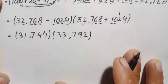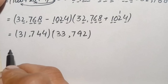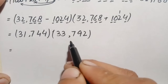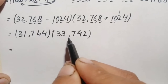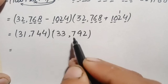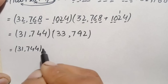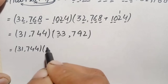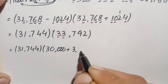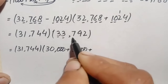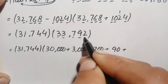We will multiply 31,744 times 33,792 without a calculator and without standard multiplication. We keep 31,744 as is and break 33,792 into its place values: 30,000 plus 3,000 plus 700 plus 90 plus 2.